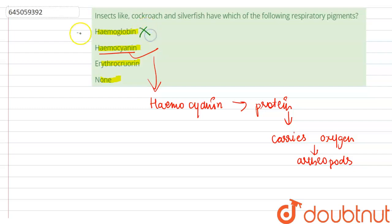Now let us discuss the other options. Hemoglobin is basically the respiratory pigment found in blood of all the vertebrates, so this option is incorrect. Erythrochlorine is found in the blood of annelids, so this option is also incorrect.